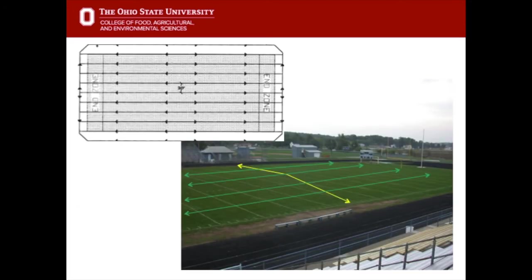This is what a drainage system would look like. It would run end zone to end zone, with trenches about 20 feet apart, running perpendicular to the crown, so that when water runs off the crown to the sidelines it is intercepted by these pipes running perpendicular.